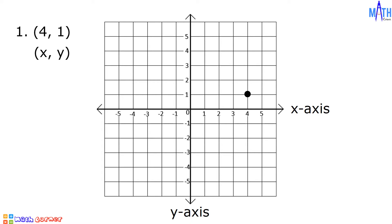Next, we have (5, -3). From the origin, we will move 5 units to the right and 3 units downward. And this is (5, -3).